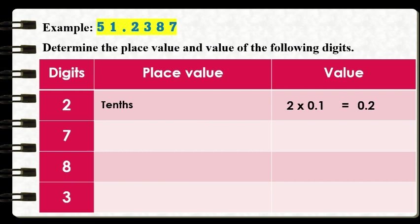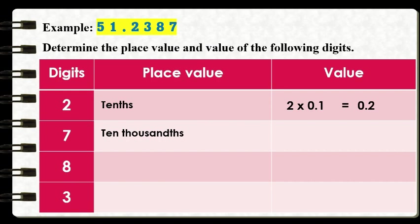How about 7? The digit 7 takes the fourth place from the right of the decimal point — tenths, hundredths, thousandths, ten-thousandths place. To get its value, we multiply 7 by 1 ten-thousandths, which equals 7 ten-thousandths.